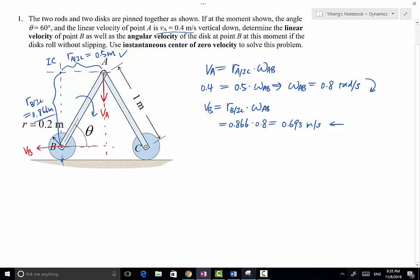So as you can tell, using the instantaneous center of zero velocity, we can quickly determine angular velocity and linear velocity of some other points on the same rigid body.